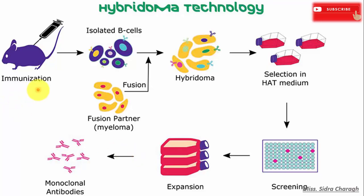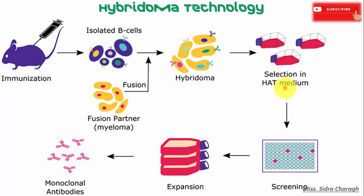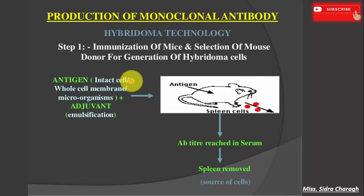To produce monoclonal antibodies, first we immunize mice with a foreign antigen. After a few weeks of immunization, we isolate spleen cells, from which we isolate B cells, and we also prepare myeloma cells as the fusion partner. We fuse these two cell types using polyethylene glycol to form hybridoma cells. We then select them in HAT medium, screen for specific antibody-producing cells, perform expansion, and finally harvest the monoclonal antibodies.